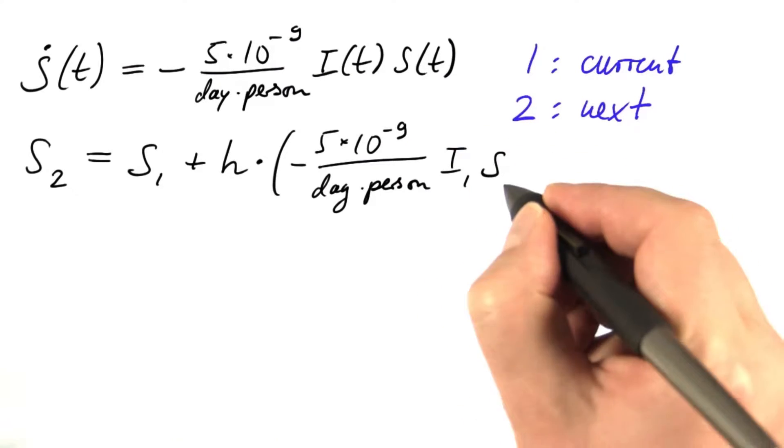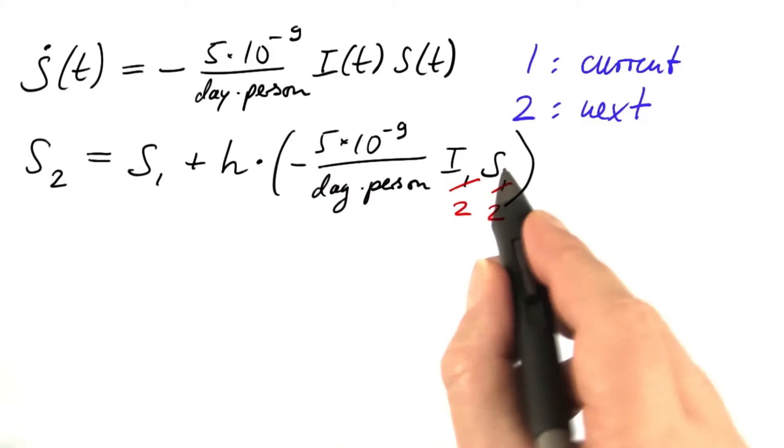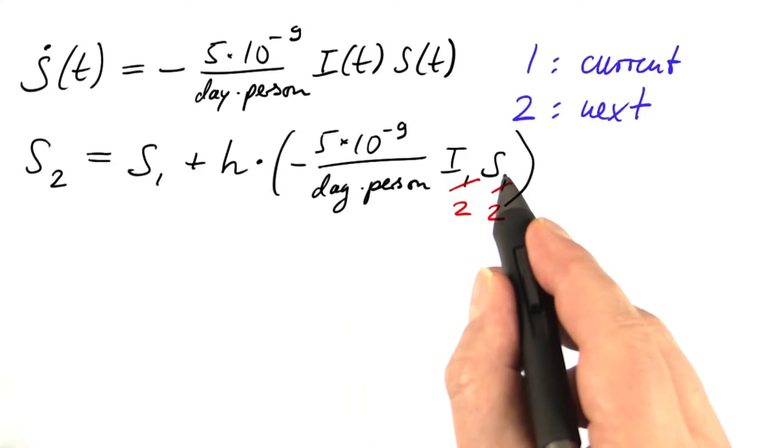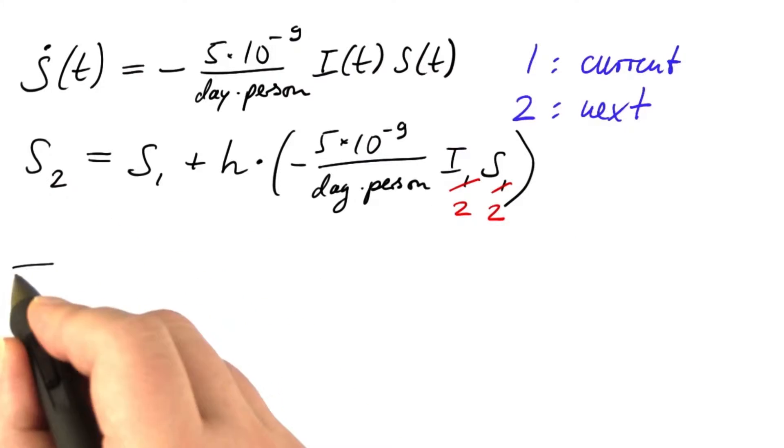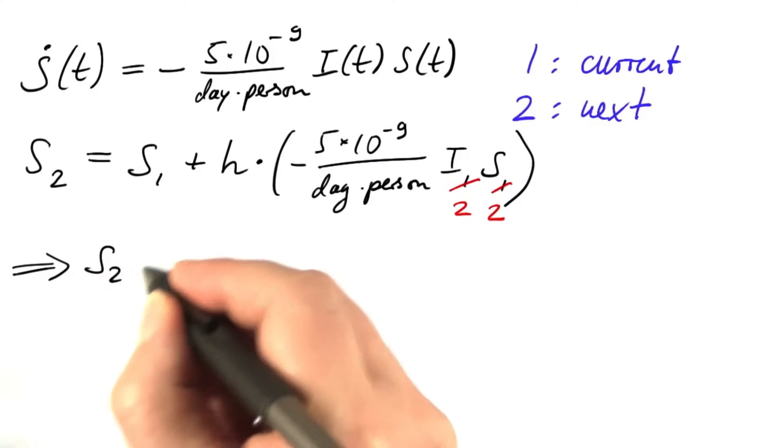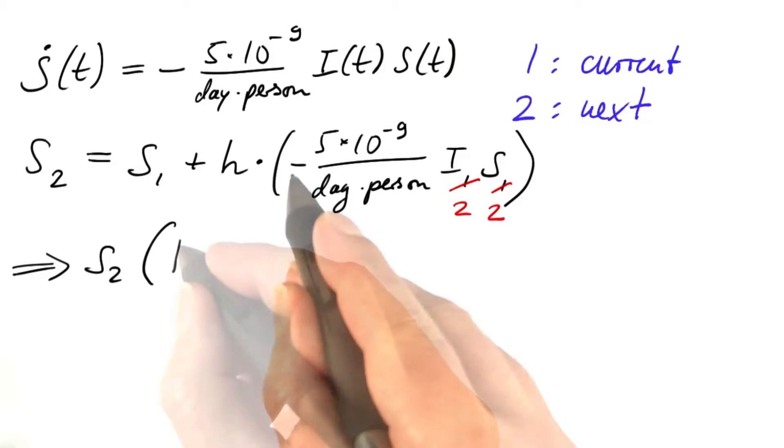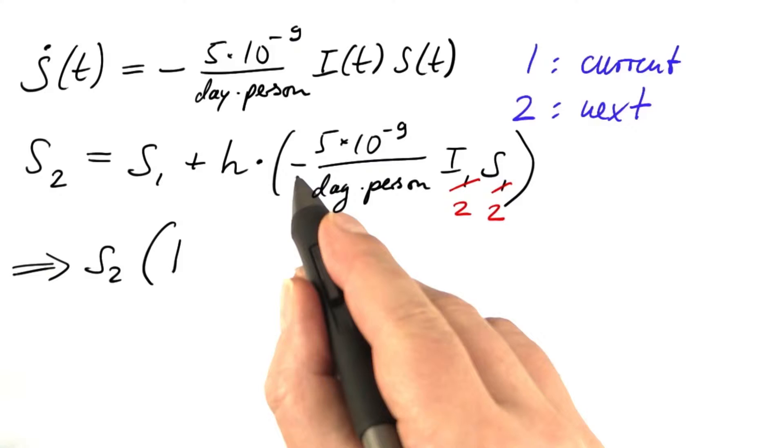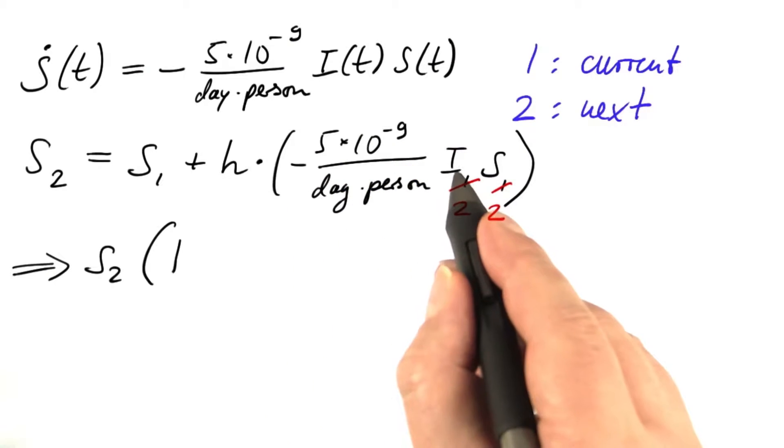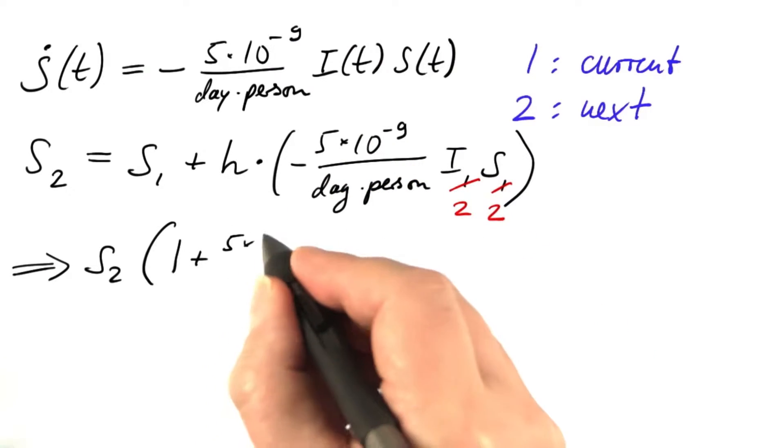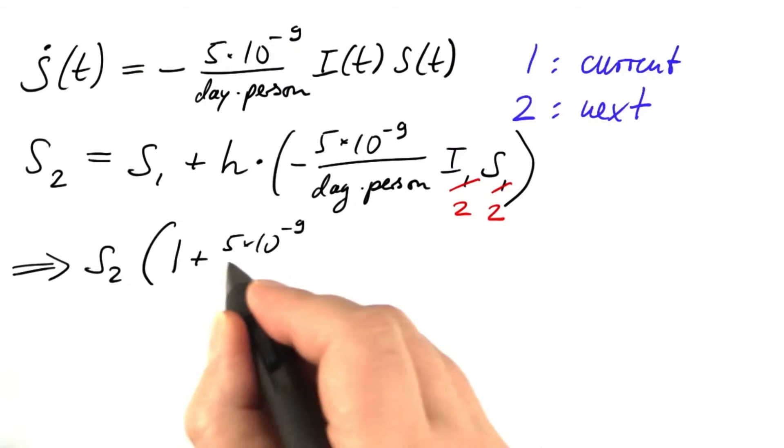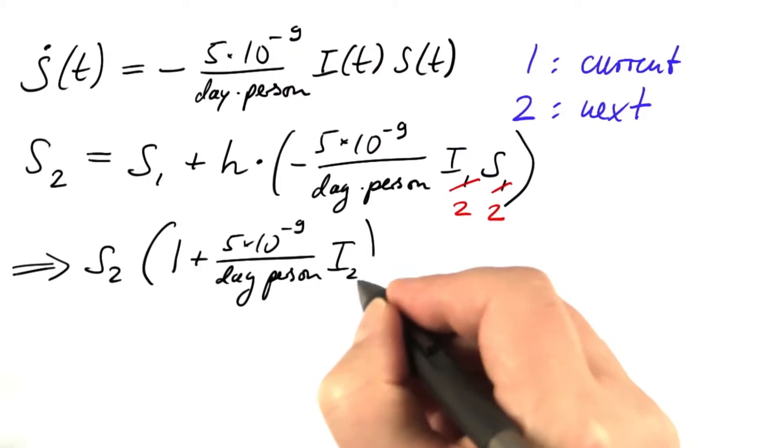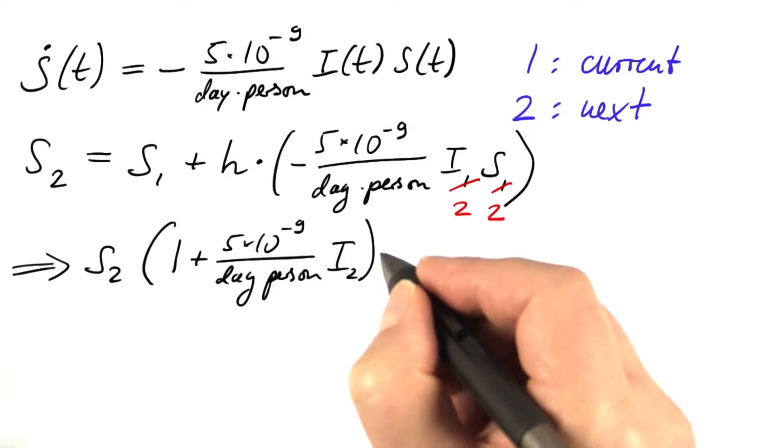If we were doing forward Euler, but now that we're doing backward Euler, this has to be i one step after that and s one step after that. We bring this term to the left-hand side because we're interested in s2 and we factor out s2. So there's a factor of 1 times s2 and now it's plus this coefficient times i2 times s2. 5 times 10 to the minus 9 divided by day and person, i2.